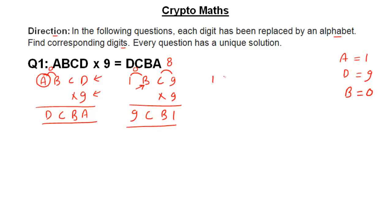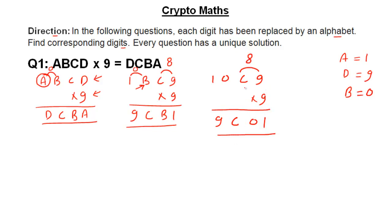So I rewrite this as 1 0 C 9 multiplied by 9, giving 9 C 0 1. Now only one digit is left. The carry from 9×9 is 81, so carry is 8. Now: 9 times C plus 8 must equal a number ending with 0. So 9 times C plus 8 equals a number ending in 0. Trying C equals 8: 9 times 8 is 72, plus 8 is 80. There is no other possibility, so C equals 8.